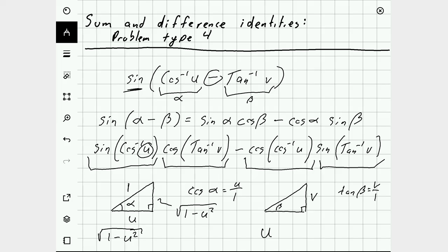So the opposite side over here is v. The adjacent side down here is 1. And the hypotenuse, using the Pythagorean theorem, must be square root of v squared plus 1.